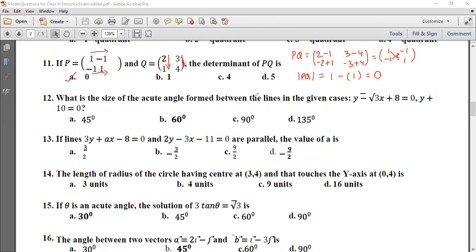Problem 12: What is the size of the acute angle found between the lines in the given cases? In this case, y is equal to mx plus c, where m is the slope. In the second case, we have mx. So the acute angle is equal to tan theta equals plus minus m1 minus m2 by 1 plus m1 m2. So m1 is root 3, m2 is 0. Acute angle is tan inverse root 3, which equals tan 60. So 60 degrees is the answer.